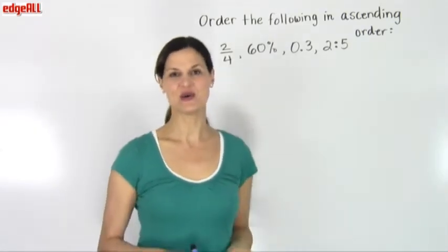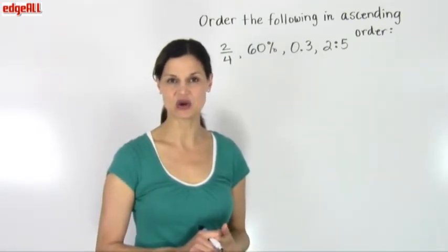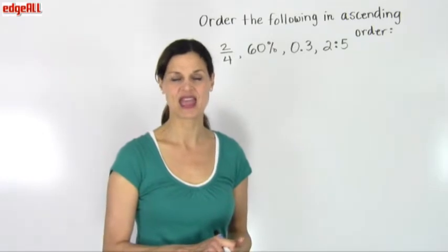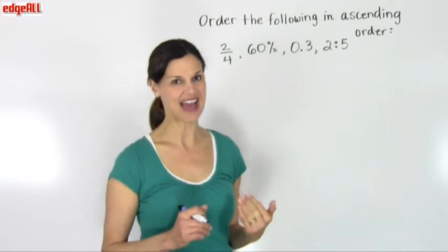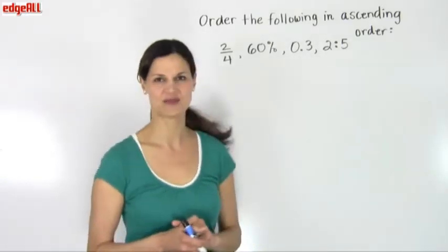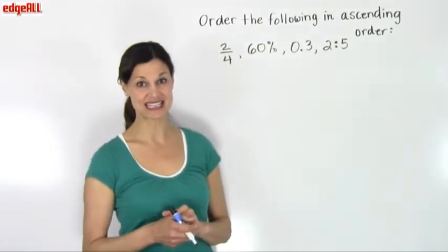The best way to order these is to convert each of the numbers to its equivalent decimal form. Once that is done, then we can easily order the numbers and we'll put them back in their original form. So let's get to work on each of these, putting them into decimal form.